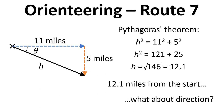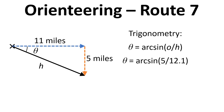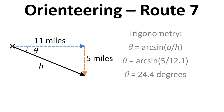But then we need to think about direction. We're going to look at this angle here, theta. To work this out we're going to use trigonometry — specifically theta equals the inverse sine, or arc sine, of opposite over hypotenuse. In this case the opposite is 5 miles, and the hypotenuse is 12.1, so that gives us theta equals 24.4 degrees.